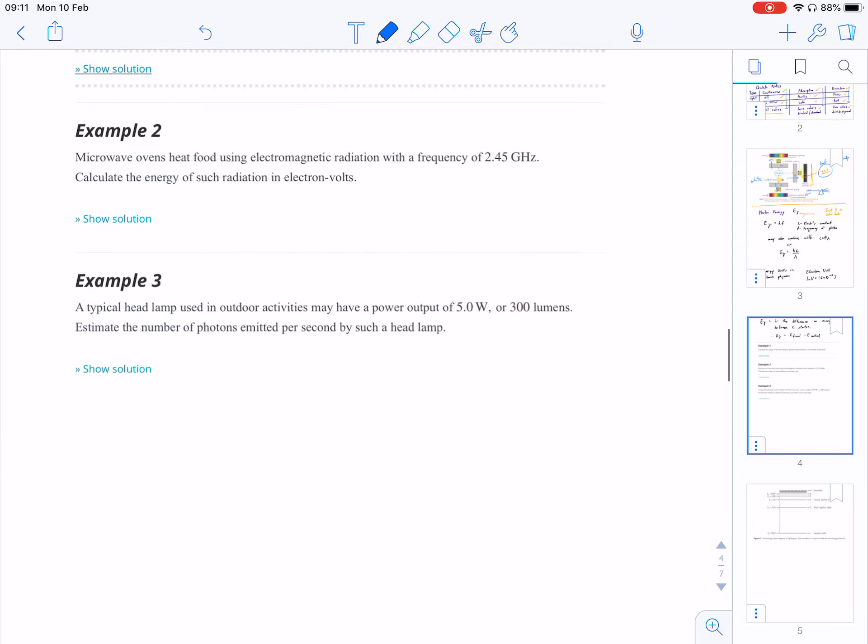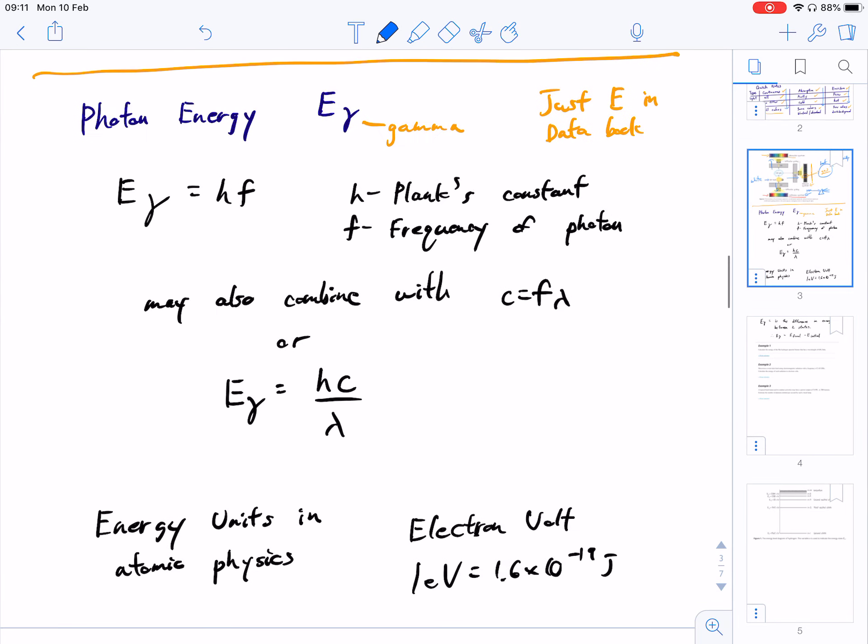So we're going to be looking at the use of this photon energy formula, and in case my writing isn't very clear, this is E gamma. And the basic formula for this is E equals hf, where h is Planck's constant, so just a number like pi, multiplied by the frequency of the photon itself.